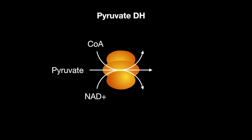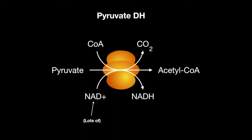The reactants are pyruvate, NAD+, and CoA, and the products are acetyl-CoA, CO2, and NADH. If there is a large amount of NAD+ compared to NADH, this activates it, driving the reaction forward. ADP and calcium also activate this complex.